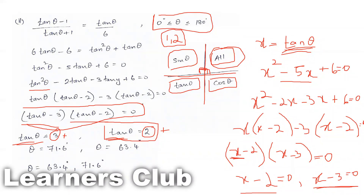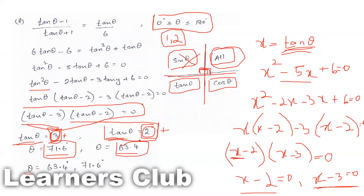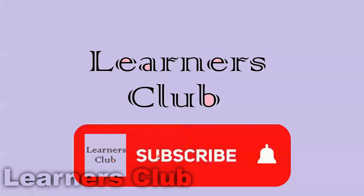Using a calculator, tan⁻¹(3) gives 71.6 degrees and tan⁻¹(2) gives 63.4 degrees — both in the first quadrant. If you tried the second quadrant the tan values would be negative, so they would not give 2 or 3. Therefore both answers are in the first quadrant: θ equals 63.4 degrees and 71.6 degrees. I hope you understood this question. If you like this video please subscribe to my channel and press the bell button to get notified of new videos. Thank you.